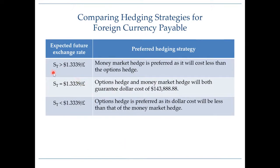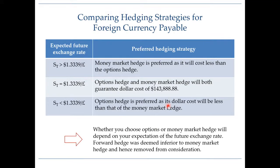What this means is: if in the future the spot rate is going to be greater than $1.3339, you would prefer money market hedge because the cost will be less than the options hedge. If the future spot rate is exactly $1.3339, options hedge and money market hedge will both cost $143,888 and you are indifferent. But if the spot rate is expected to be lower than $1.3339 per pound, then options hedge is preferable because it generates a lower total dollar cost. Which strategy you prefer really depends on your expectation of the future exchange rate.